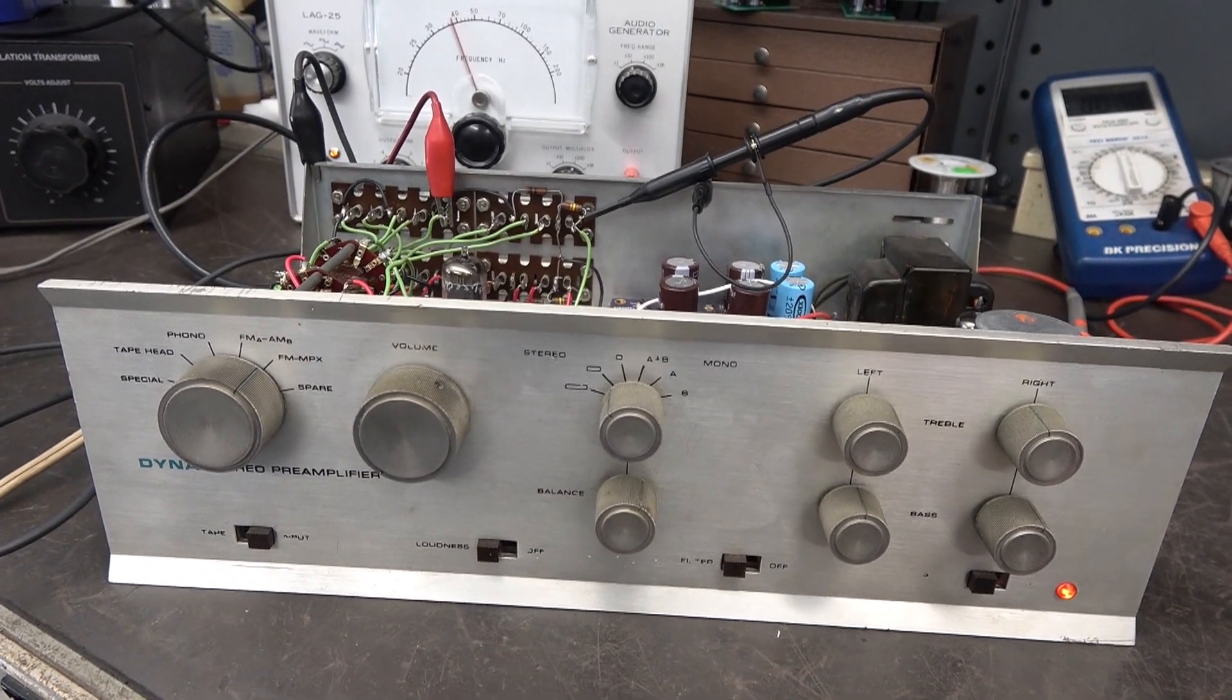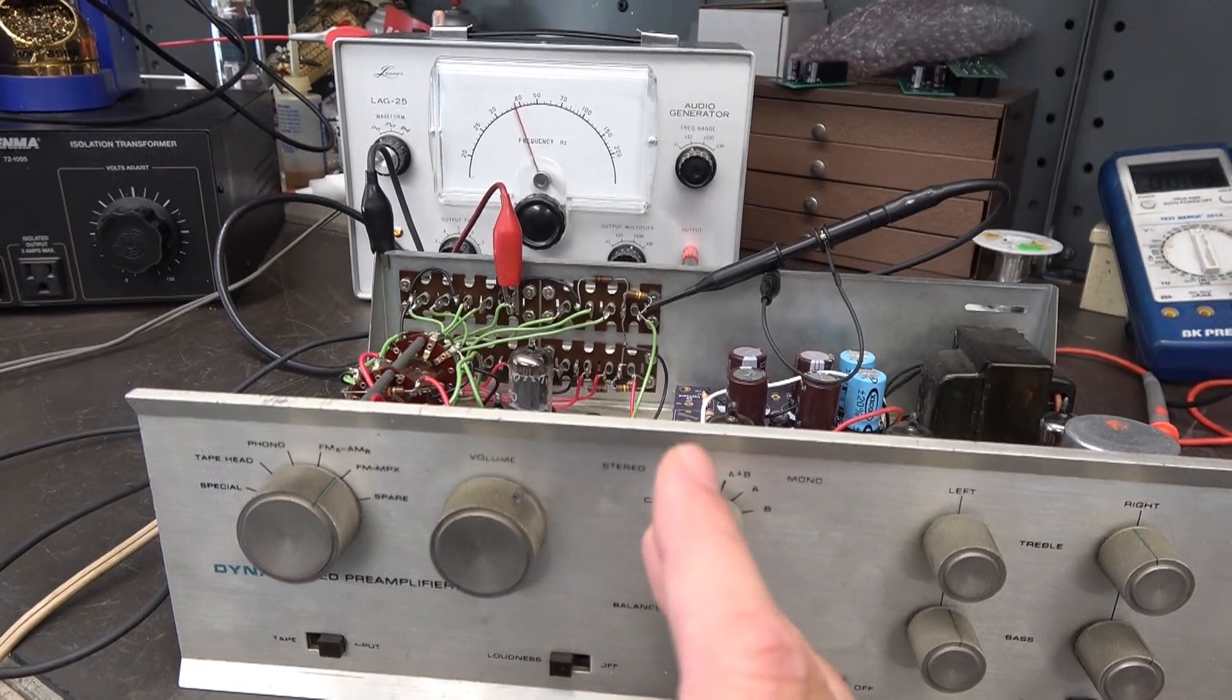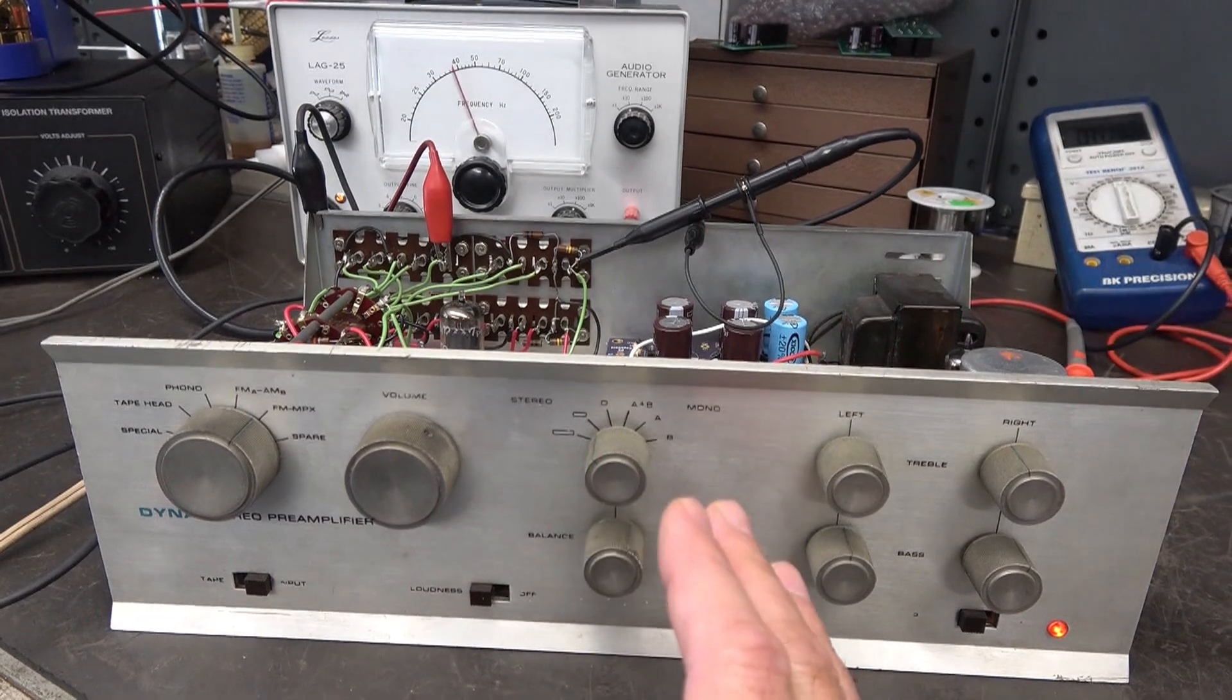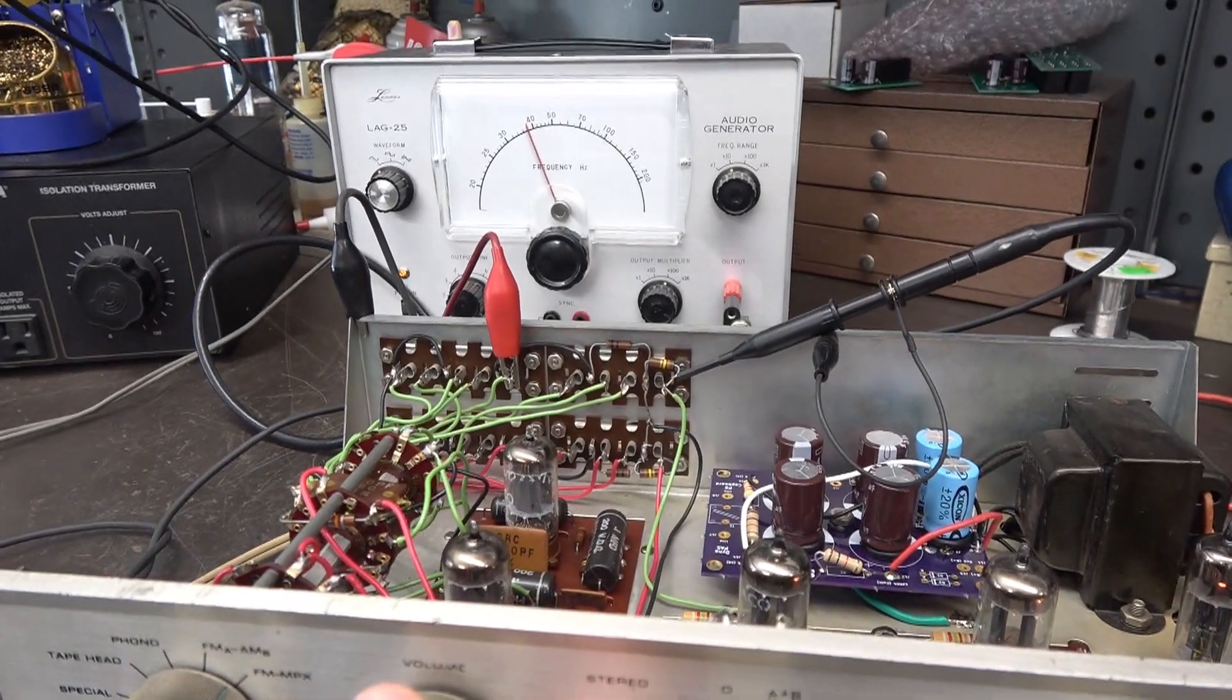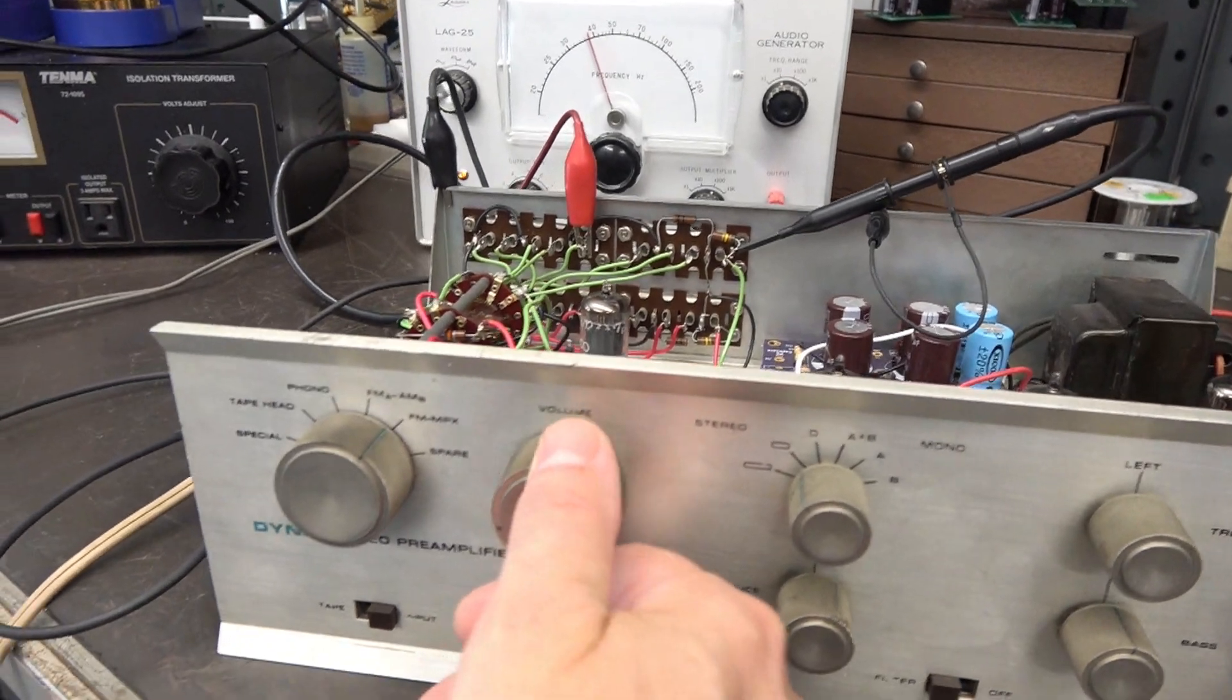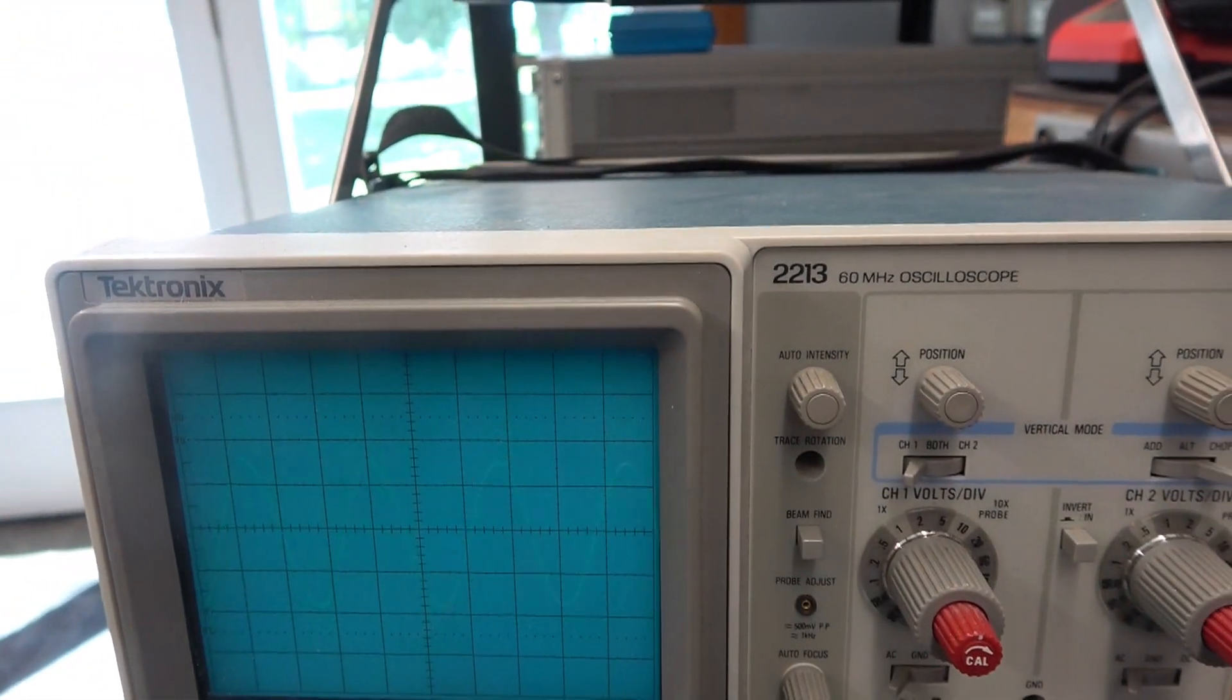I've got the PAS with full power applied. I'm going to check just the left input at this time and then I'll switch over to the right. I have not cleaned any switches, so we may see a little bit of distortion when I'm turning things up. I've got an audio generator going to the FM input. I'm going to bring up the volume, let's take a look at the scope. There she is.